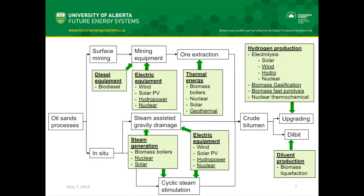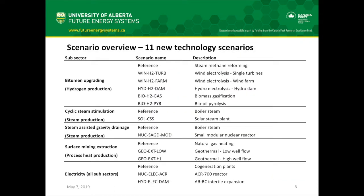This diagram shows all the technologies we identified for each subsector of the oil sands. Not all of these technologies have enough data for us to understand their costs of incorporating them in Alberta. The underlined technologies are the ones we were able to find enough data for to develop scenarios, and this is a list of the 11 scenarios we came up with for technology options.